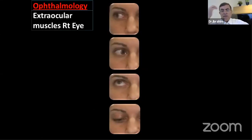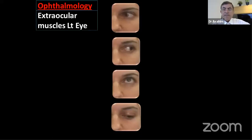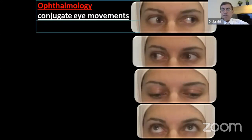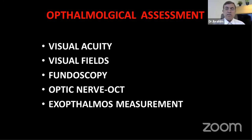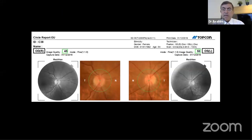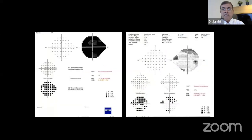Here is one bilateral case. In my series the presentation was: proptosis first — 47 out of 55 (85 percent); optic nerve involvement 70 percent; cranial nerve involvement 15 percent; seizures 3 out of 55. When you get a patient with sphenorbital meningioma and proptosis, you examine eye movements of each eye separately — right eye, left eye — then conjugate and saccadic movements. Then assess visual acuity, visual fields, optic nerve OCT, and exophthalmos measurement before surgery so you can document improvement postoperatively.